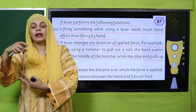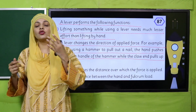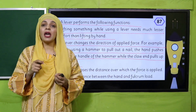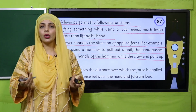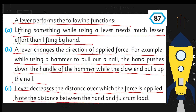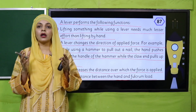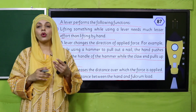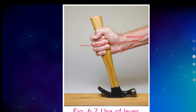When the claw hammer's claw is inserted into the nail and effort is applied — in a downward direction — the nail comes out easily. This is how the lever changes the direction of force. If you tried to pull the nail out by hand, you could never do it. A lever also decreases the distance over which force is applied. Notice the distance between the hand and the fulcrum and the load — this makes lifting the load easier.